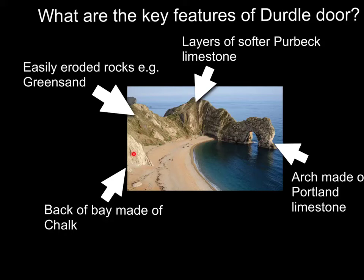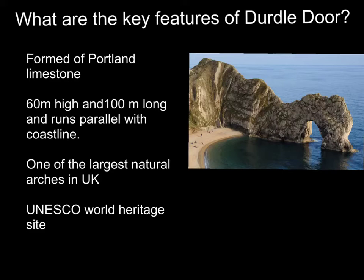Most importantly, this layer of Portland Limestone, which runs all the way along this coast, is very, very resistant to erosion — far more resistant than elsewhere. The arch itself is one of the largest natural arches in the UK: 60 metres from top to bottom, jutting out about 100 metres into the sea, with the arch gap being about 25–30 metres across. All of this is formed of the very resistant Portland Limestone. Because it's such a spectacular feature, along with other stretches of this coastline, it has been declared a UNESCO World Heritage Site — the highest award the United Nations can give any physical feature.